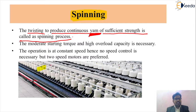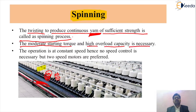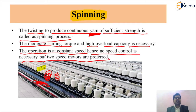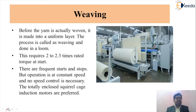From the cotton material we get a simple continuous yarn through the spinning process. The requirement for the spinning process is a moderate value of starting torque and high overload capacity. The operation is at constant speed, so no speed control is necessary, but two-speed motors are preferred because we need to twist cotton to get a very strong yarn.